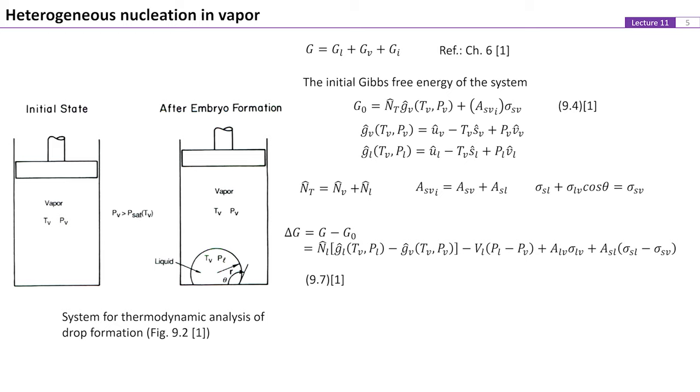Sigma Sv is the surface free energy of the solid to vapor interface. After the formation of the liquid droplet embryo, the total free energy for the system is the sum of free energies corresponding to bulk liquid, bulk vapor, and the interfaces between the vapor, liquid, and solid phases. The change in free energy associated with the formation of this droplet embryo can then be defined as equation 7. Gl is the free energy per mole of the liquid phase. Nt equals Nv plus Nl, where Nv is the number of moles of fluid in vapor phase and Nl is the number of moles of fluid in liquid phase. This ensures mass conservation.